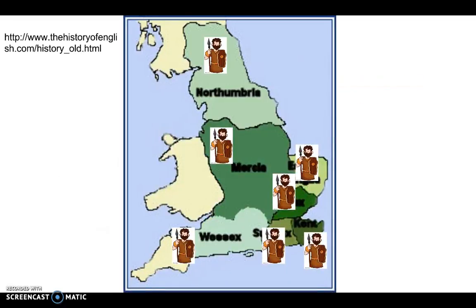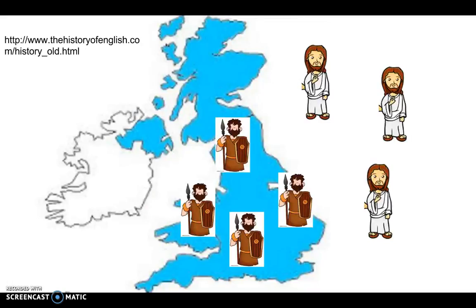With the Germanic tribes mostly in charge, they settled into seven smaller kingdoms whose power would flux over time. The warlike Saxons were the most dominant group, and the Engels were also very prominent. England started to be known as Engleland, and the emerging language started to be known as English, evolving from just a dialect into a language around 600 AD. After time, dialects of Old English started to emerge, and there became four major dialects.